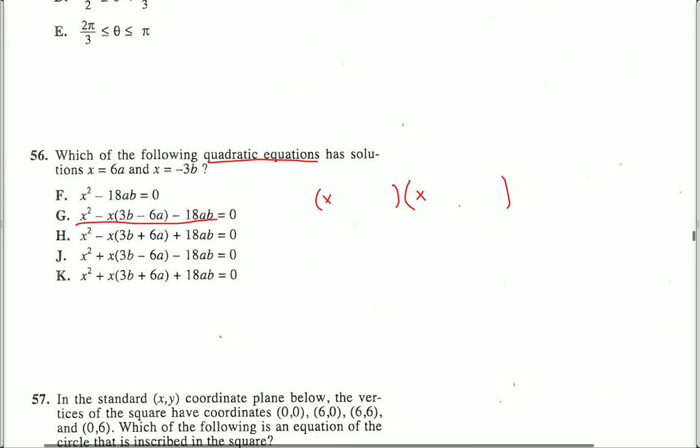In this case, x could be 6a. So that means it's going to look like this, or it could be negative 3b.